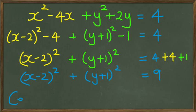So, the center of the circle, center would be at 2 negative 1 and radius of the circle is equal to 3.